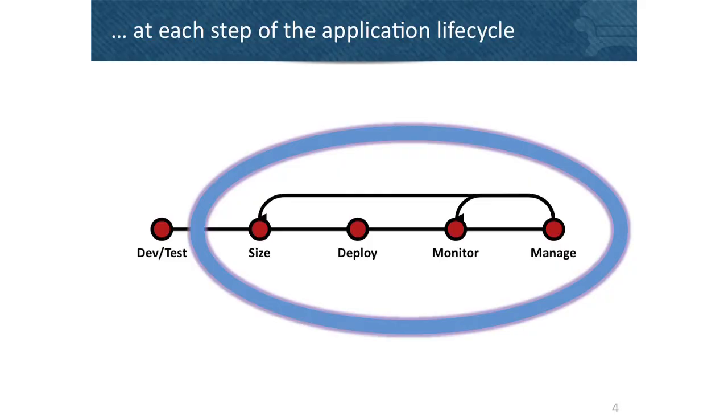We're going to focus on the idea of an application lifecycle, where once you put something into production, that's not where it ends. You're constantly monitoring, constantly resizing, constantly managing, and then looping back around again. Sometimes that's a cycle of months, sometimes weeks — it depends on your application. But at every point in this lifecycle, every day of your application's life, you need to be able to provide reliability, performance, and uptime.